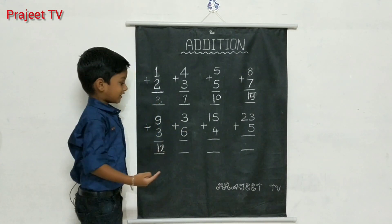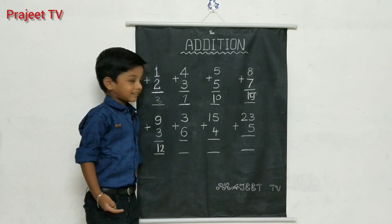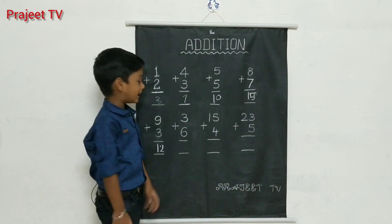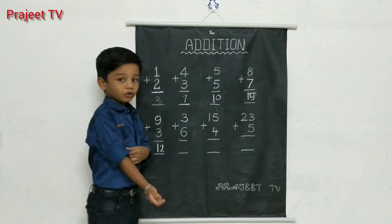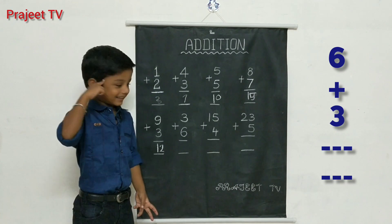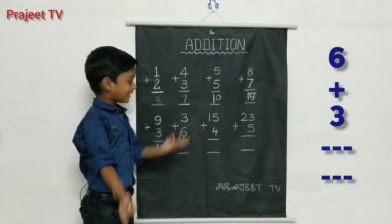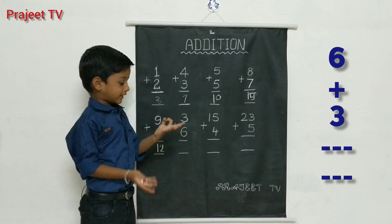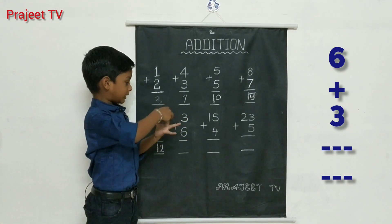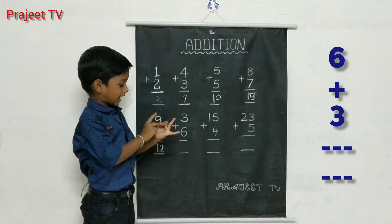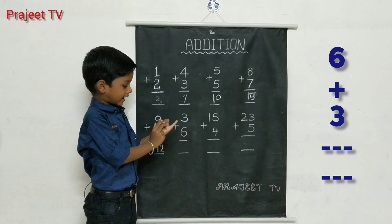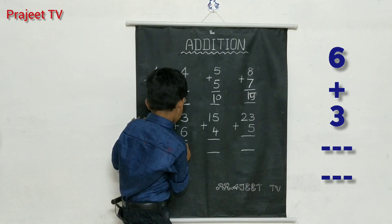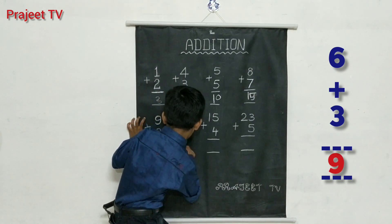Three plus six. Six in the mind, three in the fingers. Six after seven, eight, nine. Answer: nine.